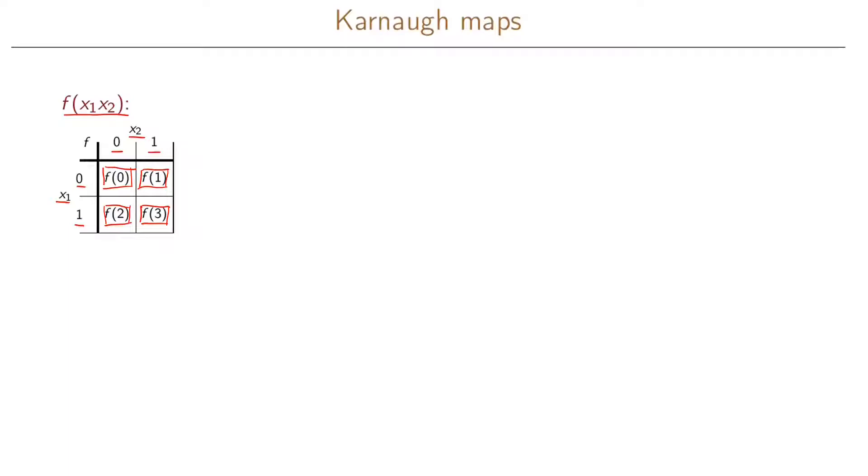And what we do here is that we enumerate the different rows and our different columns. We can only have one change in variables when we go from one row to another one. So here we only change because we only have one variable, obviously we can only have one change in a variable, because we go from zero to one.